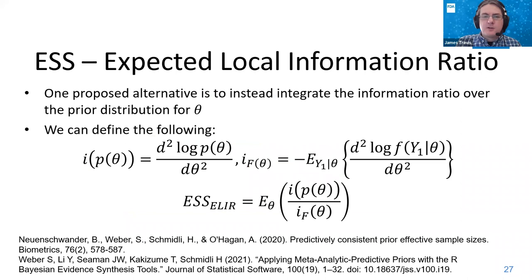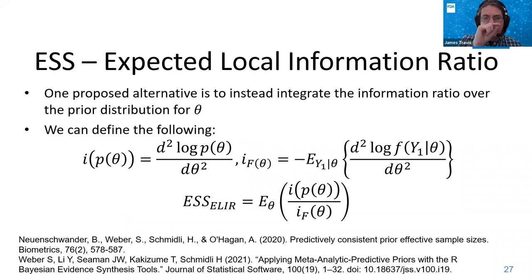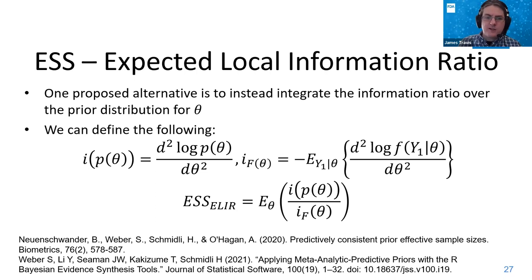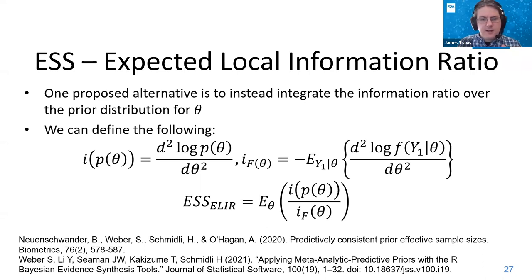Looking at the simple variance ratio for effective sample size for the mixture prior: when the true mean is close to the prior mean, we're borrowing about the same amount of information, but it drops off as we move further away. Eventually there is a negative effective sample size where the Bayesian method results in increased variance — a precision loss versus precision gain when far enough from the true mean. There have been proposed updates to effective sample size methods, such as the expected local information ratio, which integrates over plausible values of theta rather than taking a single particular value. This is discussed in the predictively consistent prior effective sample size paper, with implementation available in the R-BEST package.